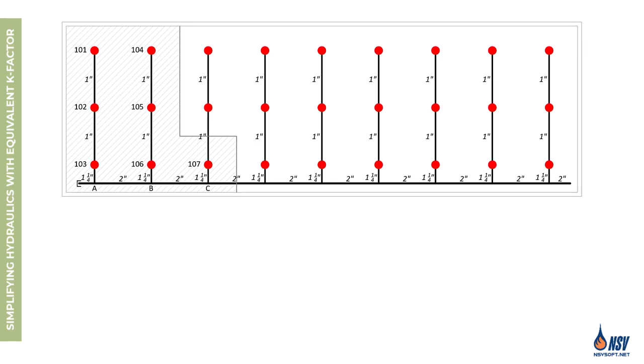In this part of the video we'll explore how the concept of equivalent K factor can simplify hydraulic calculations and save valuable time. As shown in the figure, the room is protected by 27 quick response standard spray sprinklers with a K factor of 5.6, all installed directly onto fittings without any additional piping between the sprinkler and the branch line. The branch lines are identical in both size and length, the cross main is 2 inches in diameter, and the design area includes 7 sprinklers. The calculation process begins at the most remote sprinkler — in this case, sprinkler 101.